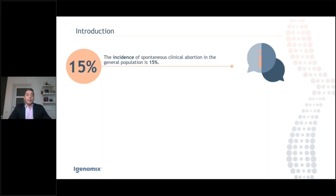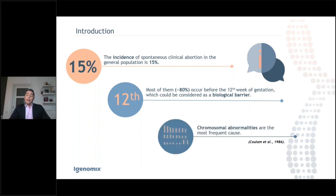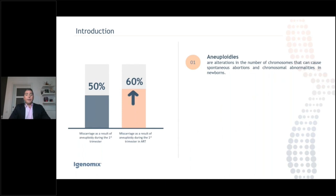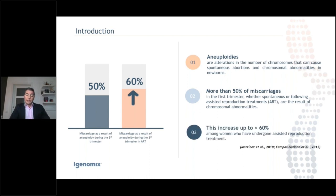As you all know, the incidence of spontaneous clinical abortion in the general population is around 15%. Most of them, around 80%, occurs before the 12th week of gestation, which we can consider as a biological barrier. Chromosomal abnormalities are the most frequent cause for those spontaneous clinical abortions. In more than 50% of miscarriages in the first trimester are the result of chromosomal abnormalities, and this could increase up to 60% among women who have undergone assisted reproduction treatment.